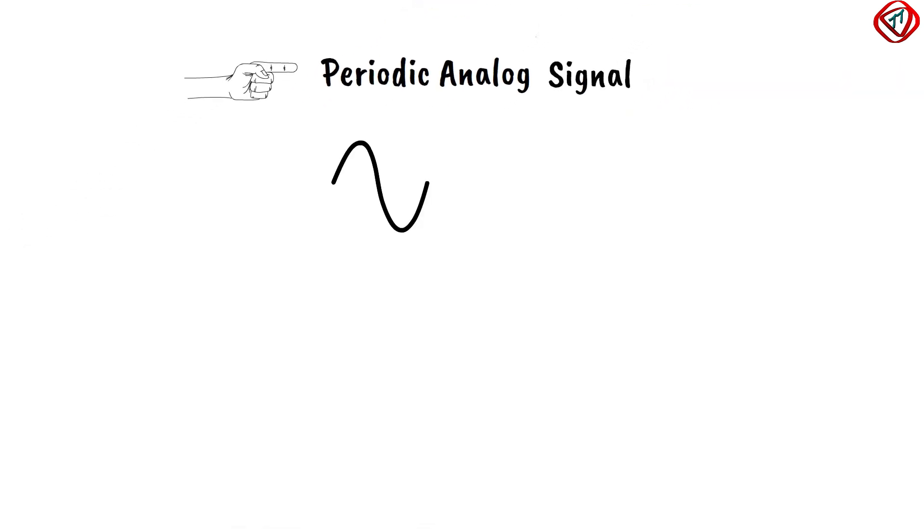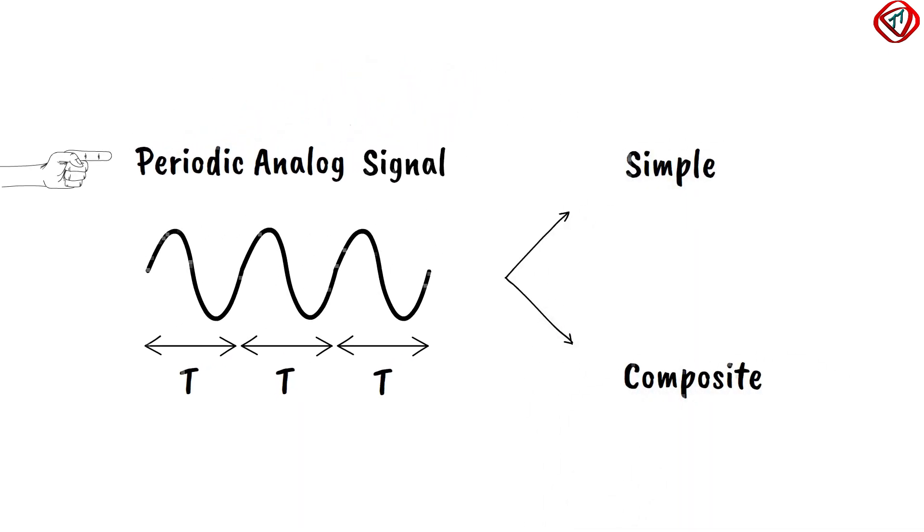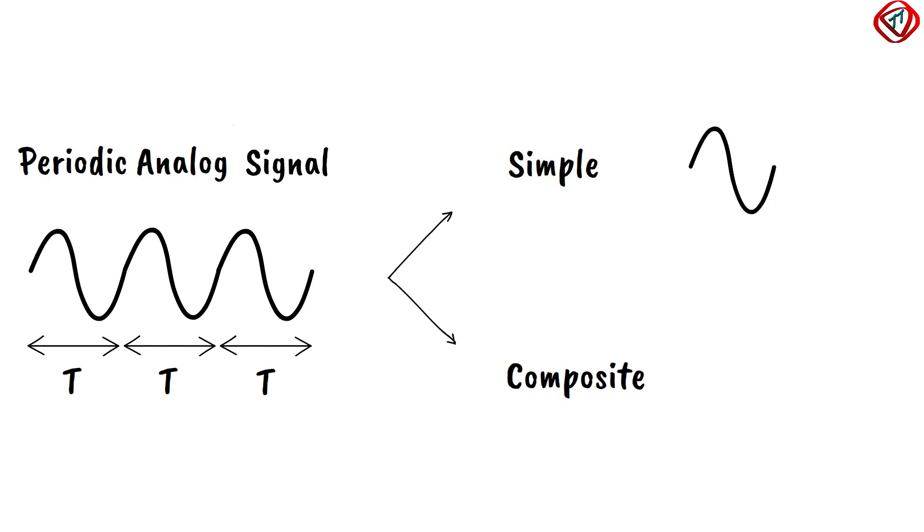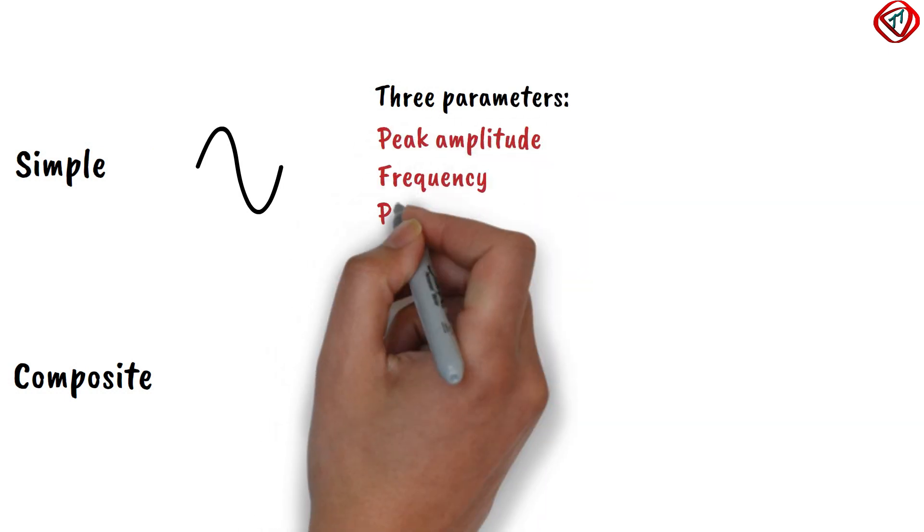A continuous signal which repeats after a fixed time is called a periodic analog signal. It can be simple or composite. A single sine wave is an example of simple periodic analog signal. It is defined by three parameters: peak amplitude, frequency, and phase.